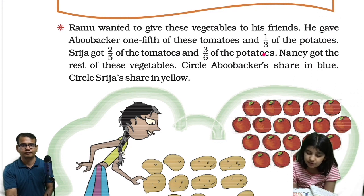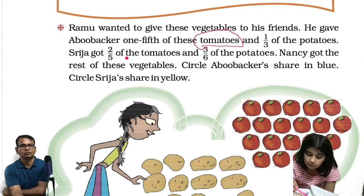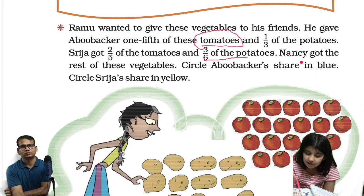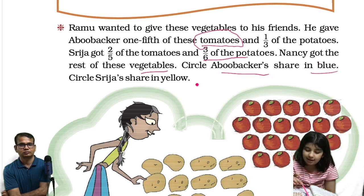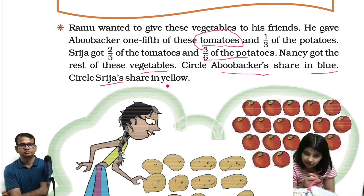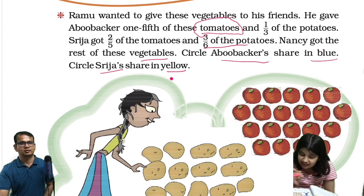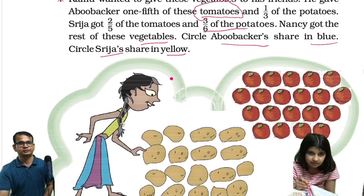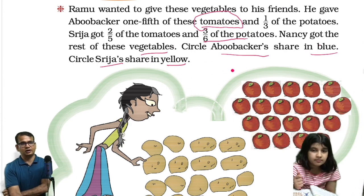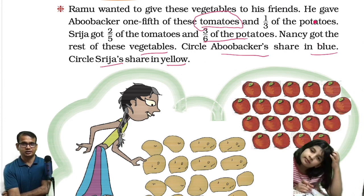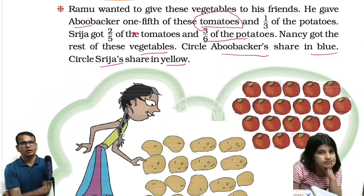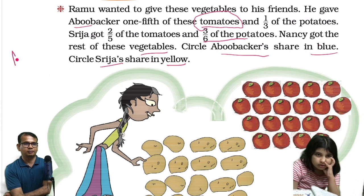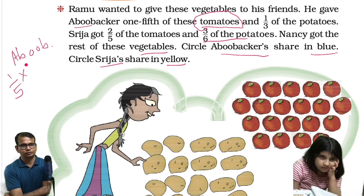Abu Bakar got one fifth of the tomatoes and one third of the potatoes. Sreeja got two by five of the tomatoes and three by six of the potatoes. Nancy got the rest. Circle Abu Bakar's share in blue and Sreeja's share in yellow. Let's attempt Abu Bakar's share first. One fifth means one by five of tomatoes.